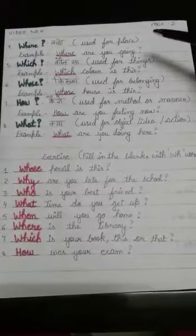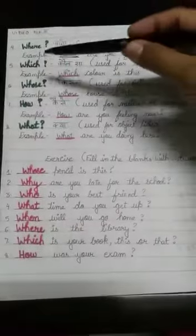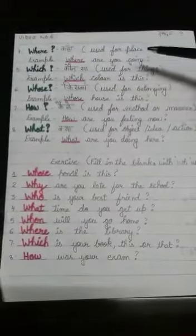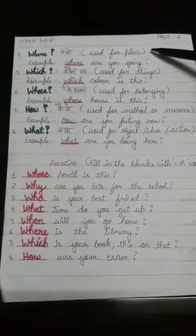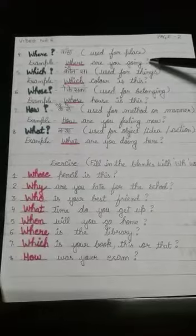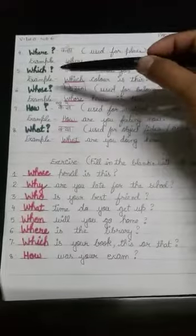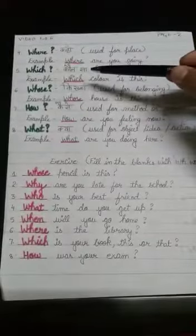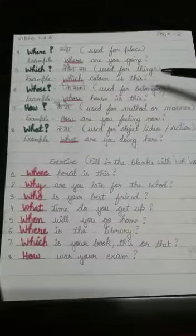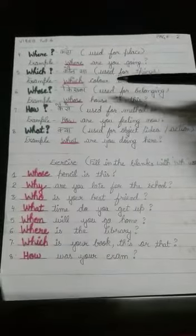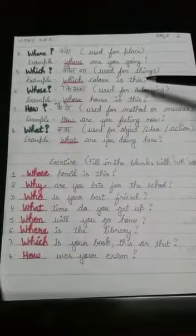W-H-E-R-E, where. Hindi meaning is kahan. It is used for place. Example: Where are you going? Number five: W-H-I-C-H, which. Hindi meaning is kaun sa. It is used for things. Example: Which color is this?